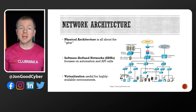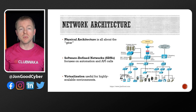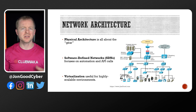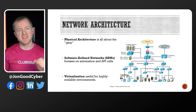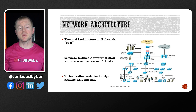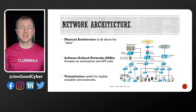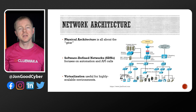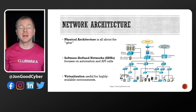When it comes to our network architecture, let's look at some things we can implement to improve its construction. When we talk about the physical architecture of our network, we're referring to gear like routers, switches, firewalls, cabling, and anything we can physically touch. Some typical physical architectures include firewalls, which protect different trust zones in our network, and intrusion prevention and intrusion detection systems to detect or stop potential attacks.